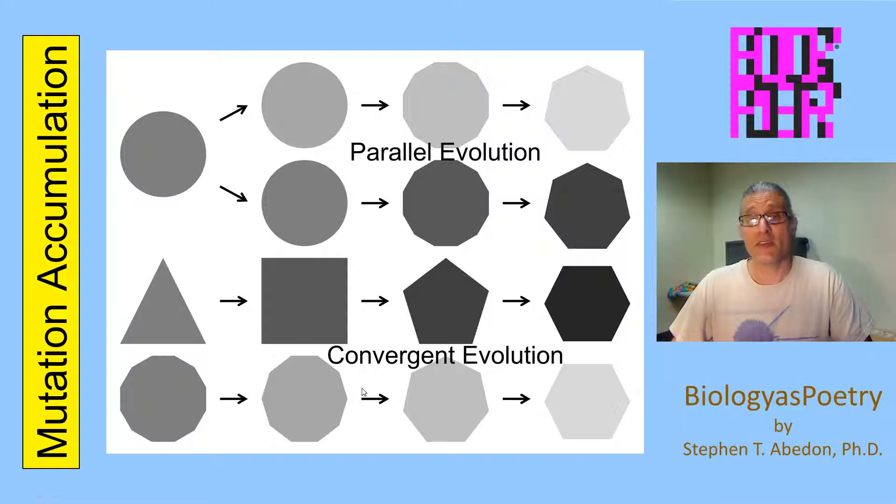In this case, if it's on a molecular level, you have nucleotides entering into sequences, changes in nucleotides that are similar between the two lineages but again as a consequence of independent mutations.